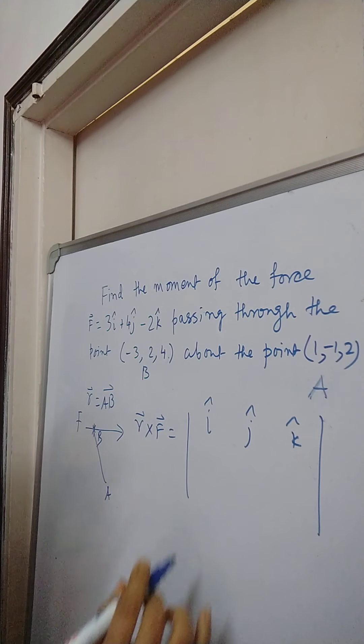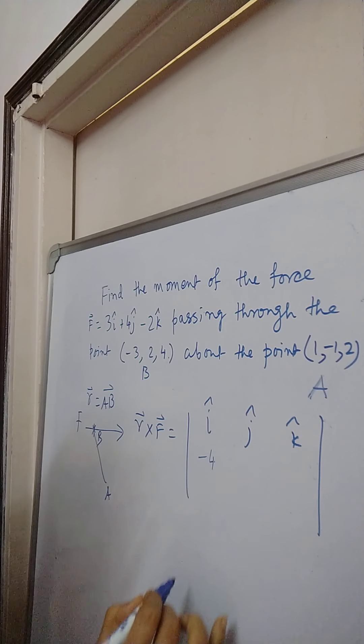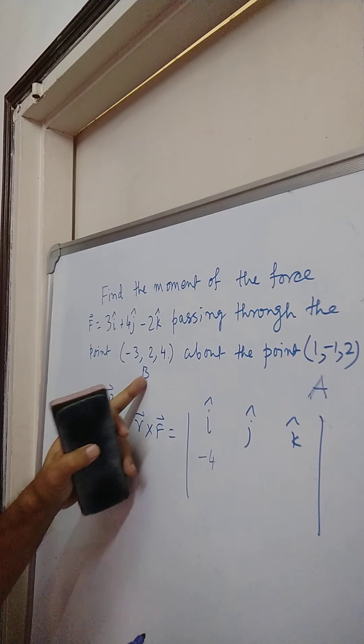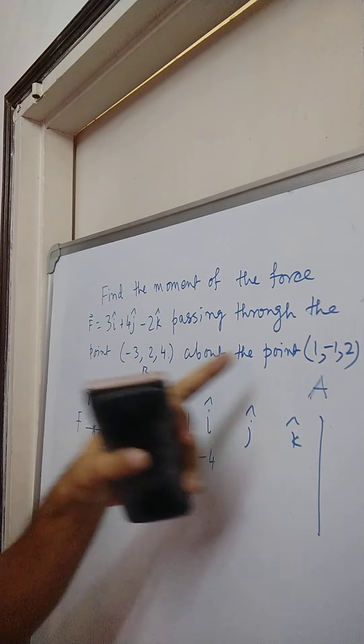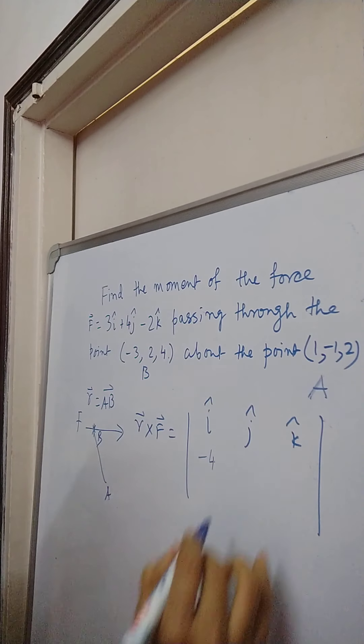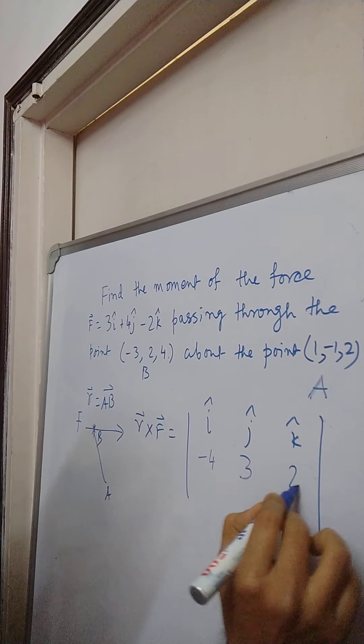What is AB? B minus A. I have calculated it and it comes out to be minus 4 because minus 3. AB is B minus A. Then 2 minus of minus 1 that is 3 and 4 minus of 2 that is 2.